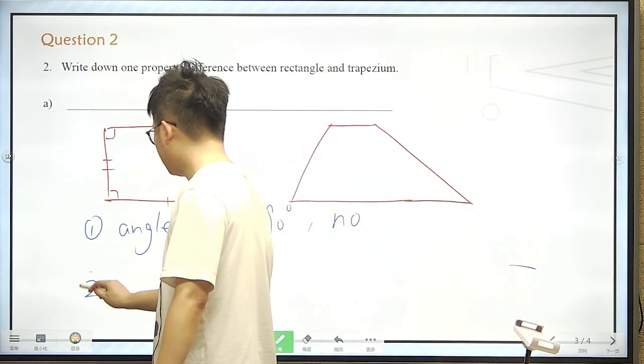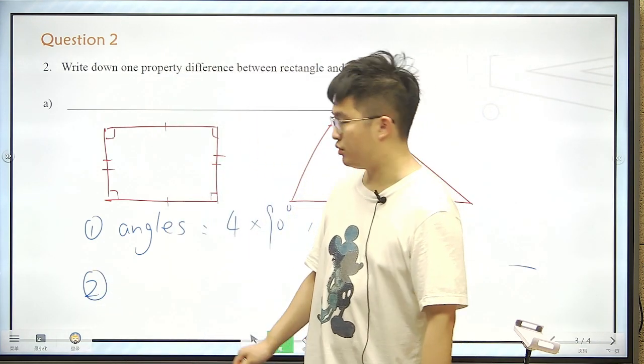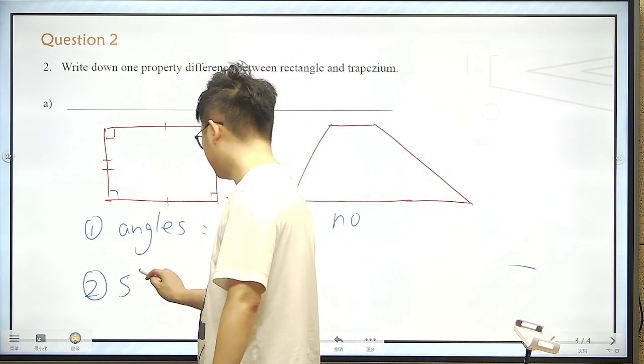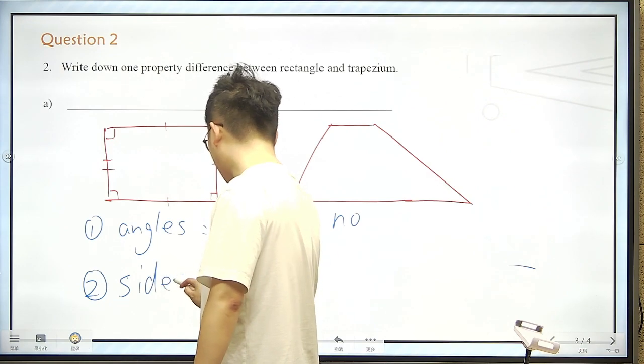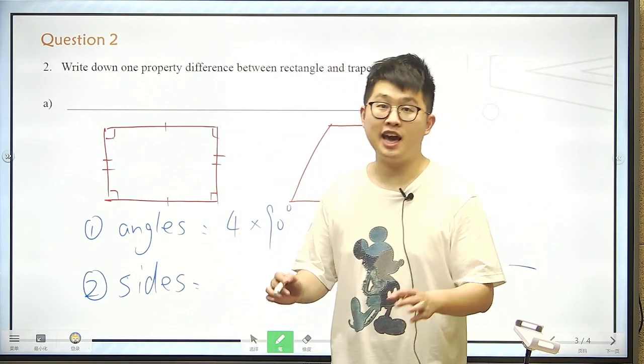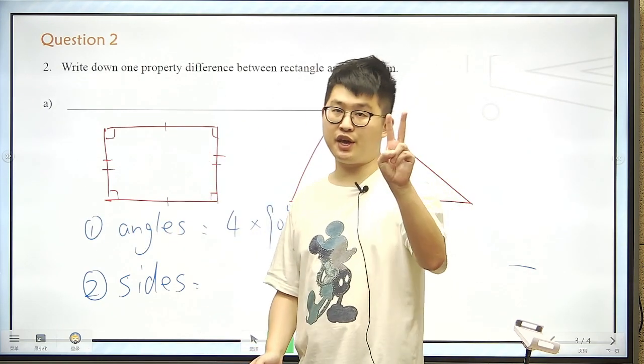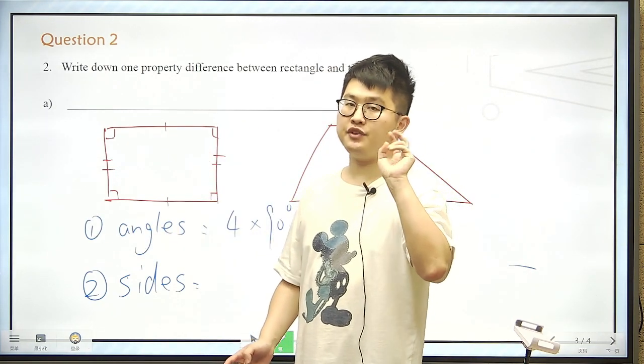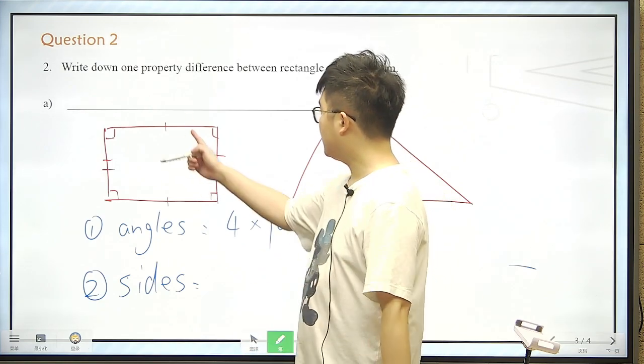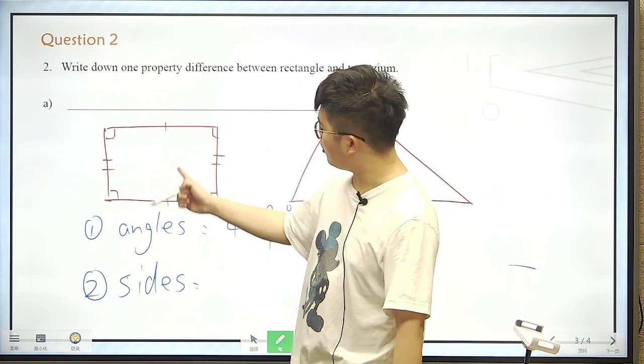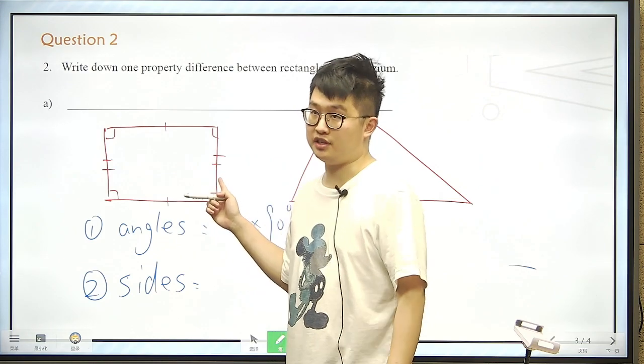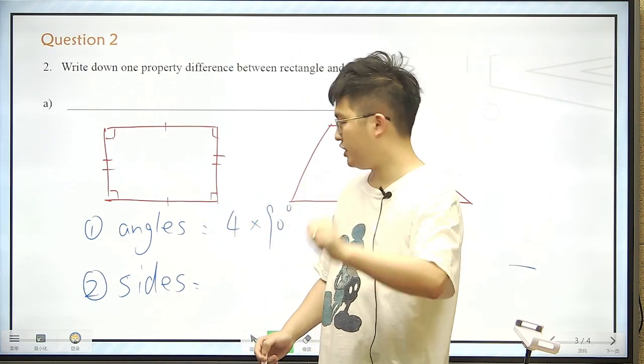And the second one would be about the sides, or we can say the edges. They mean the same thing. So in rectangle here, we have two pairs of equal sides. Because this one equals to this, and this equals to this. So there are two pairs of equal sides.